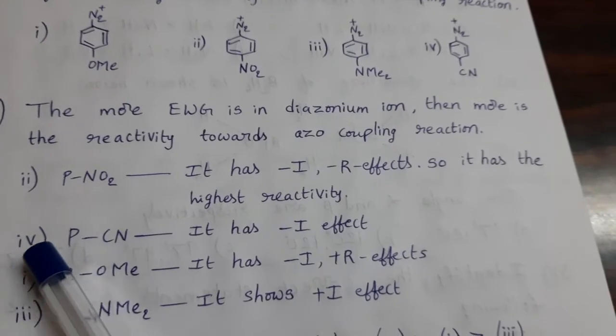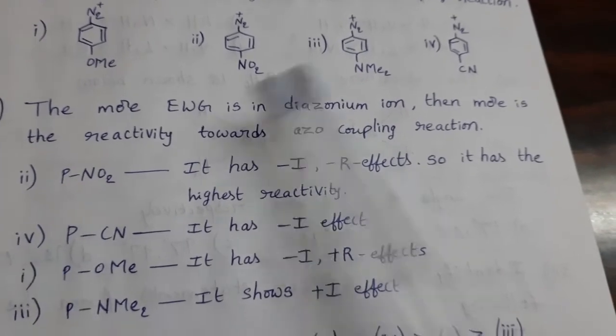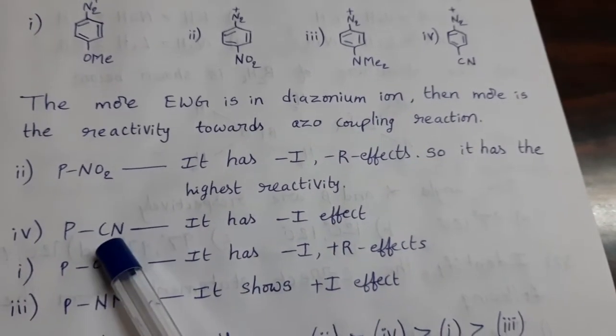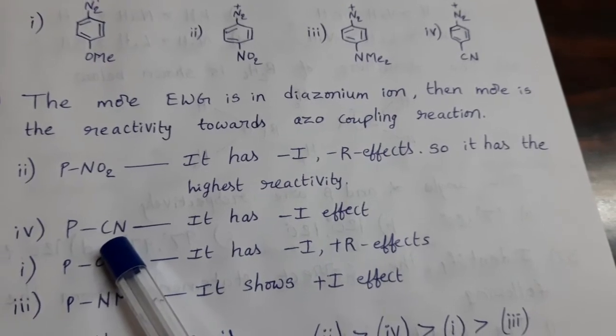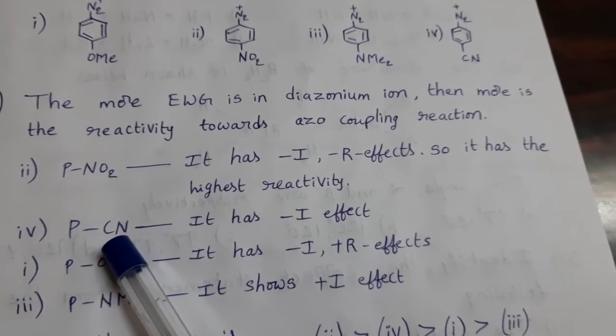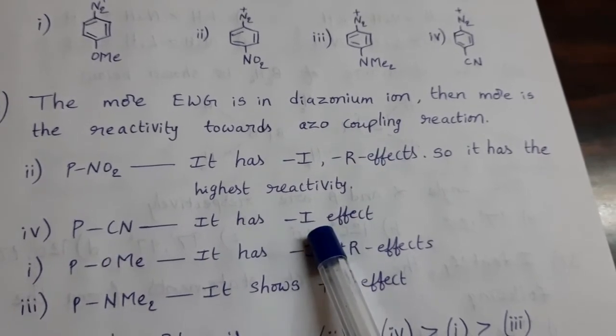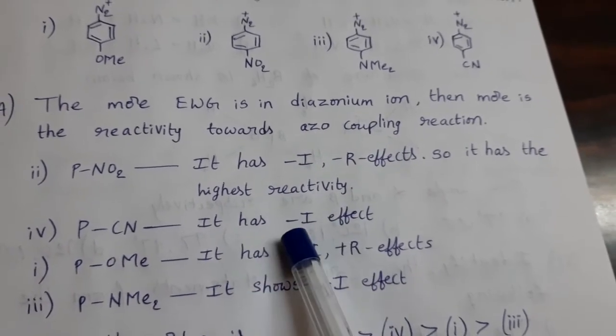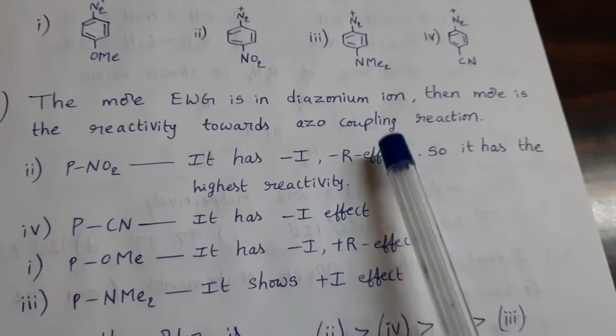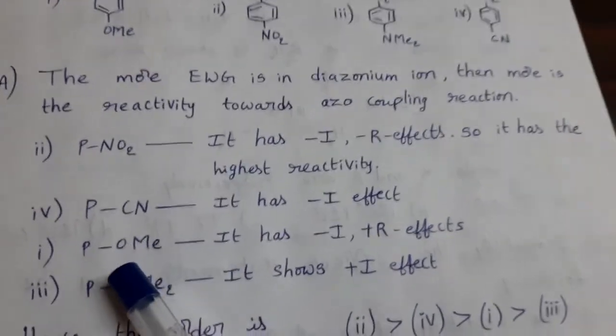At para position, cyanide group is there. CN- also electron withdrawing group. It has only one effect, -I, negative inductive effect. So its reactivity towards azo coupling is less than this one.